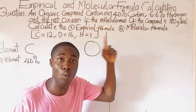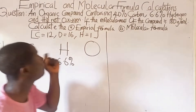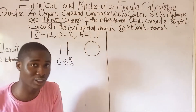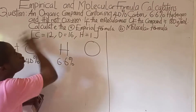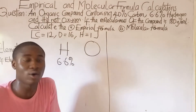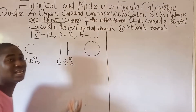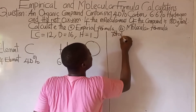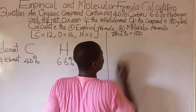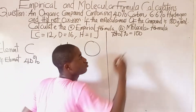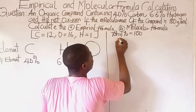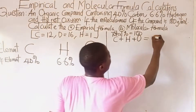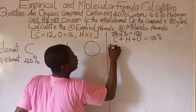As I explained in my previous video lesson, the percentages given in a question must amount to 100 — they must always give you 100. The percentage of oxygen is stated as 'the rest,' so we know the total percentage is 100. The percentage of carbon plus hydrogen plus oxygen must equal 100 percent.